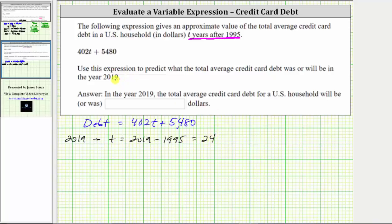2019 is 24 years after 1995, which means to determine the average credit card debt in the year 2019, we substitute 24 for T. So the debt is going to be equal to 402 times 24 plus 5,480.